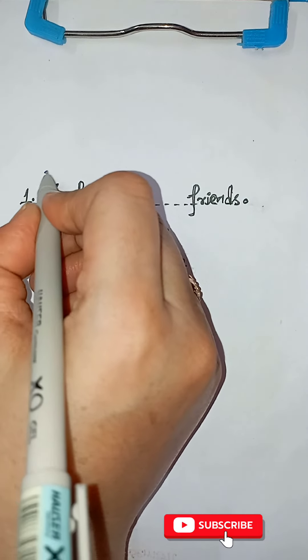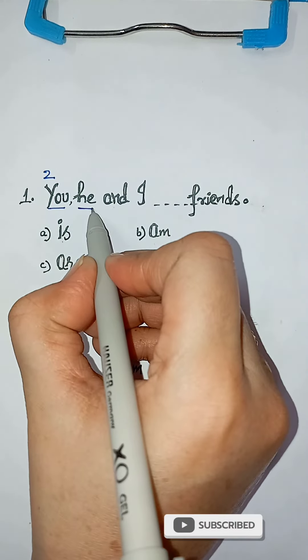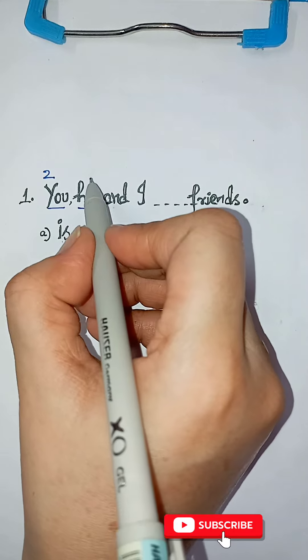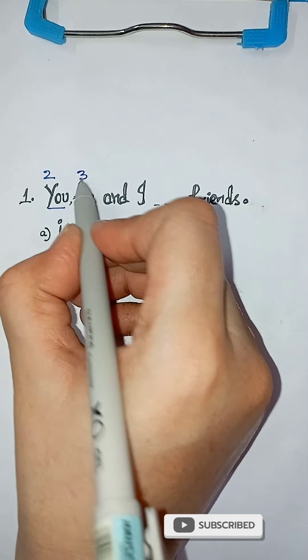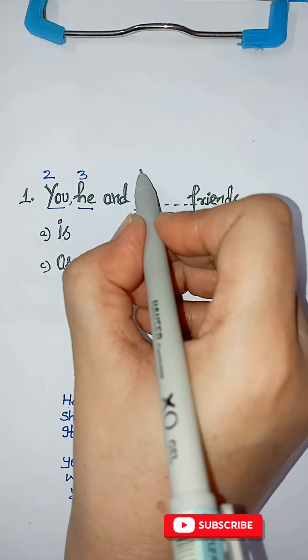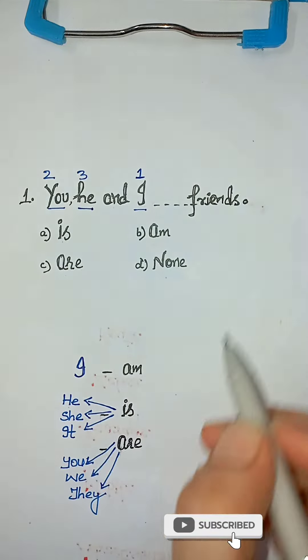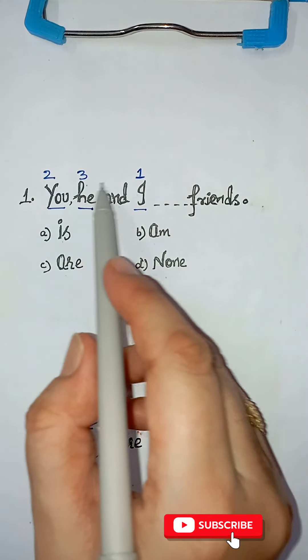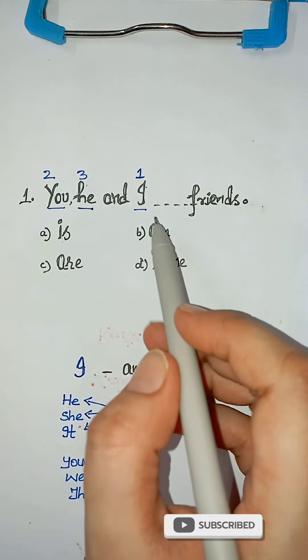You is the second person and he is third person. I is first person. Whenever two, three, one comes as a subject, you consider the first one you.